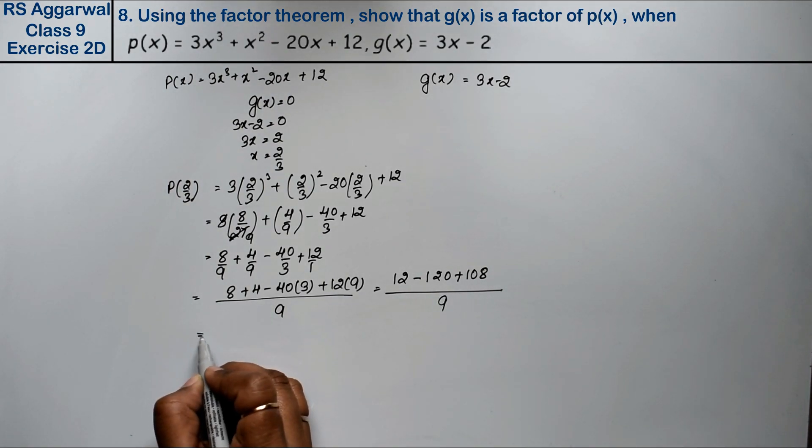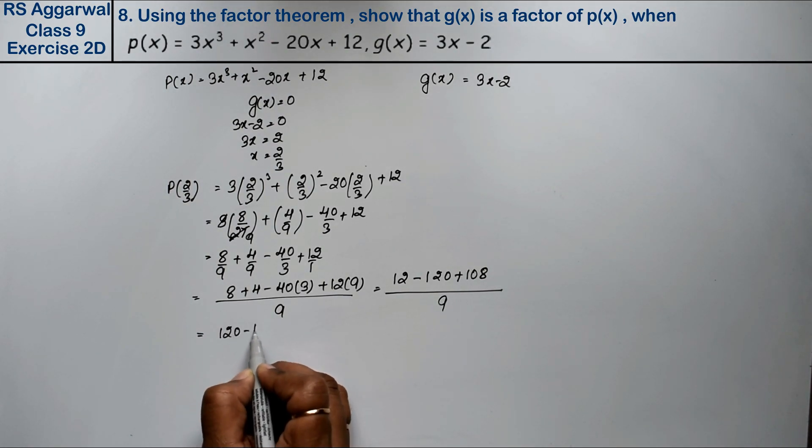This gives 120 - 120 over 9, which equals 0.